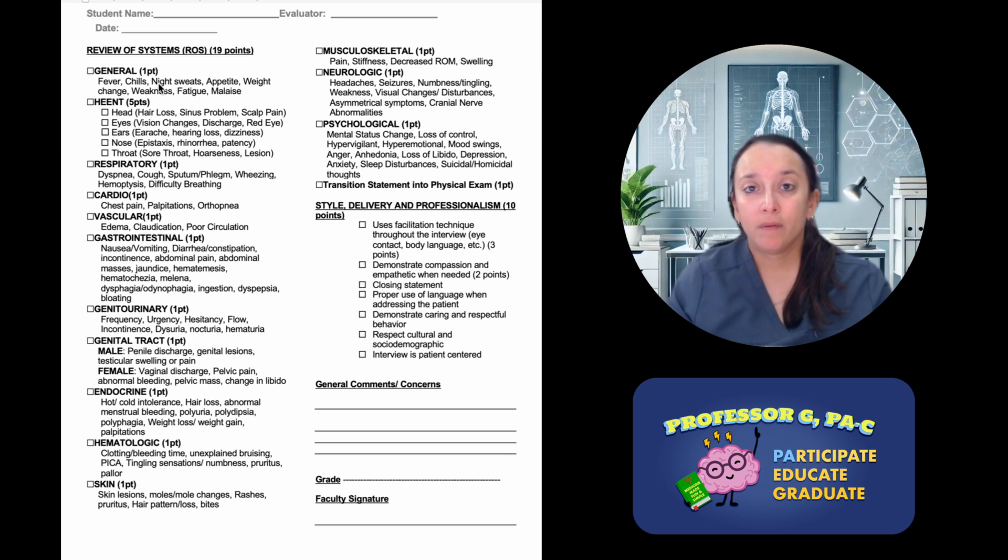So have you had any fever? No. Any chills? No. Any night sweats? No. Any appetite change? No. Any weight loss or weight change? No. Any weakness? No. Any fatigue? No. You get the point. Then you do that for the rest of the review of systems. For HEENT, you need to ask at least two per HEENT. You need to ask two for the head, two for the eyes, two for the ears, two for the nose, two for the throat, and so on moving through all of them.